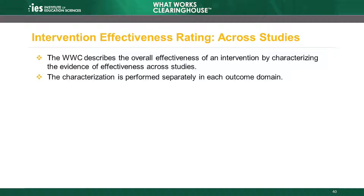In intervention reports, after characterizing findings within a single study, the WWC also characterizes the evidence of effectiveness for an intervention across studies. Like the WWC's characterization of findings within a study, the characterization of evidence across studies is performed separately for each outcome domain. The intervention effectiveness characterization is the WWC's broadest summary of the evidence for an intervention and appears near the beginning of an intervention report.